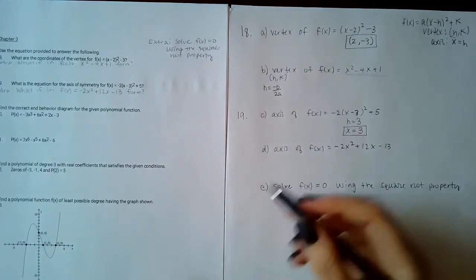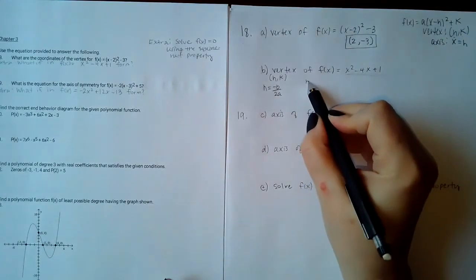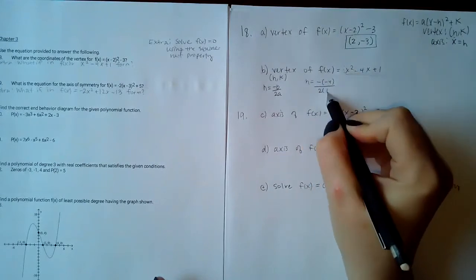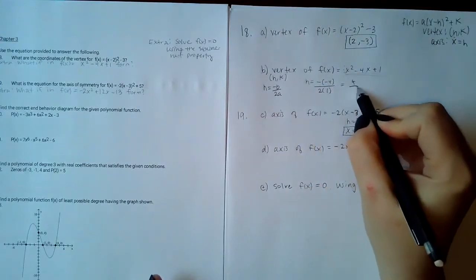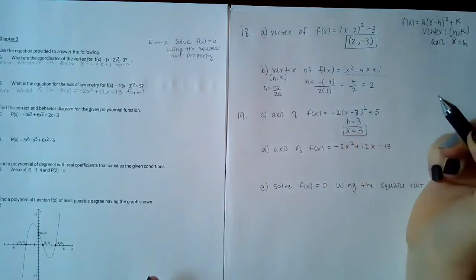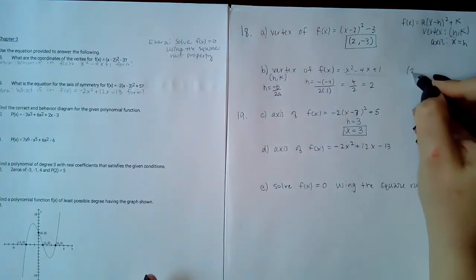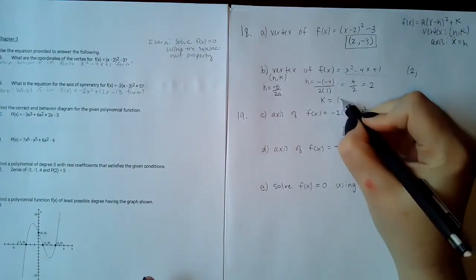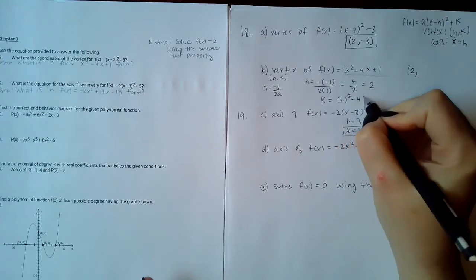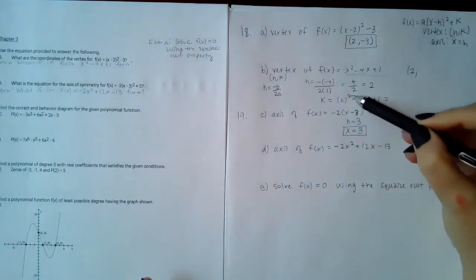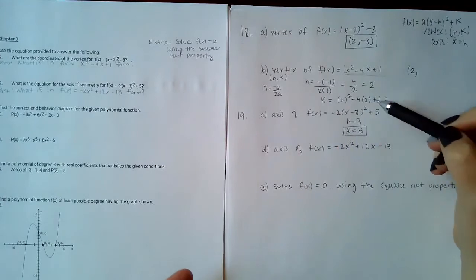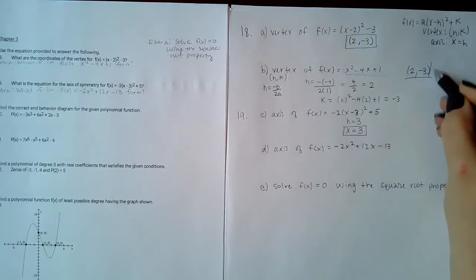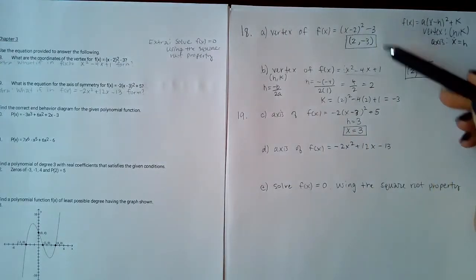I'm going to calculate h: negative b over 2a gives me 4 over 2, which is 2. So h = 2. To find k, I plug 2 into the quadratic equation and get 4 − 8 = −4, plus 1 = −3. Now I have the y-value for that vertex, so I end up with the same answer as before because these are the same equation just in different forms.